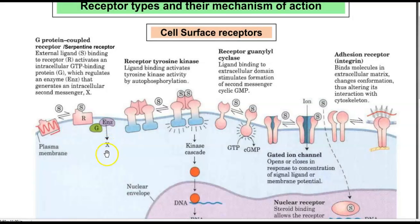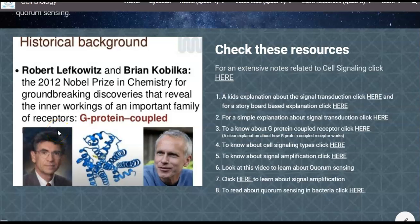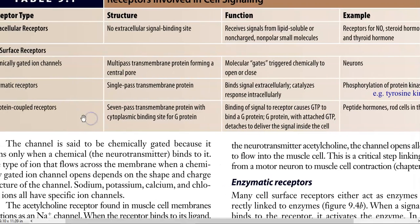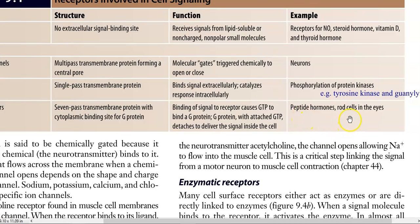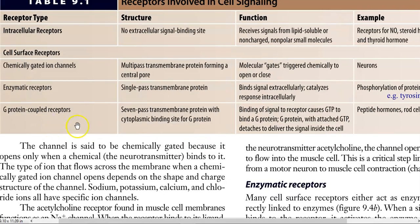This is the mechanism by which the G-protein coupled receptor functions. Its functioning has been studied extensively by two persons who were awarded the Nobel Prize in Chemistry in 2012 — Robert Lefkowitz and Brian Kobilka — for their groundbreaking discoveries related to GPCRs. The receptor has a 7-pass transmembrane protein with a cytoplasmic binding site for the G-protein. Binding of a signal causes GTP to bind the G-protein, which then detaches to deliver the signal inside the cell, including peptide hormones and rod cell activation in the eyes.